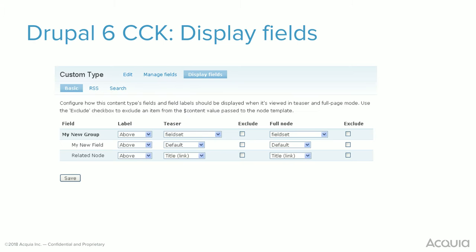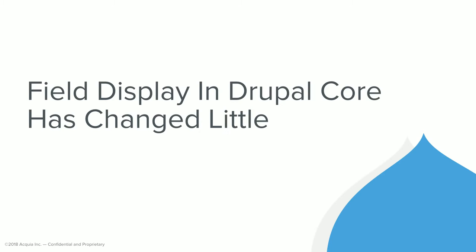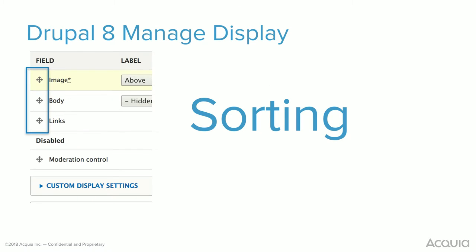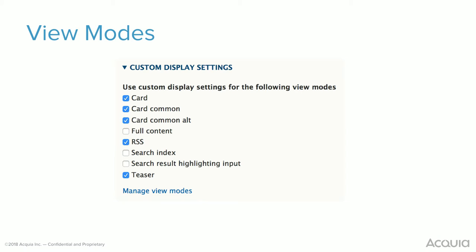This is CCK and Drupal 6, and this is how you manage fields. You have your formatters, you can exclude them, you can do stuff with the label. Drupal 7 looks pretty similar. Drupal 8 looks pretty similar. So field display in core really hasn't changed that much since Drupal 6 days. Obviously there's been a lot of stuff, but not necessarily in core. You have sorting, label options, formatters. You have view modes, so you have the basic options, but you can combine them in a lot of different ways, which becomes more powerful.